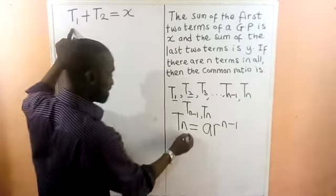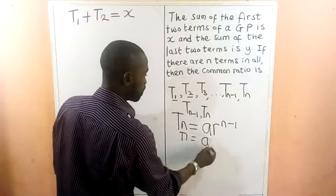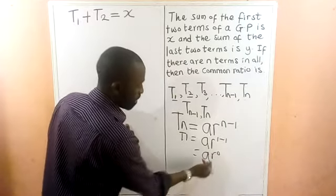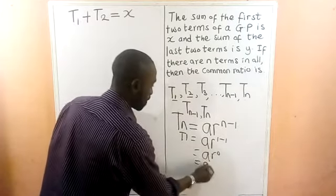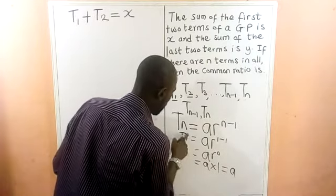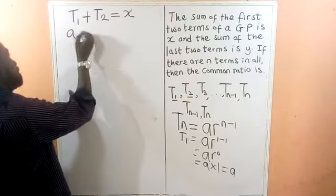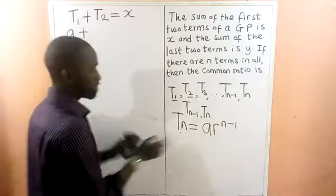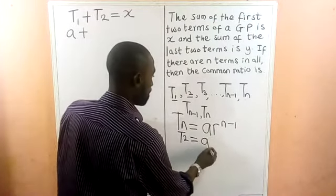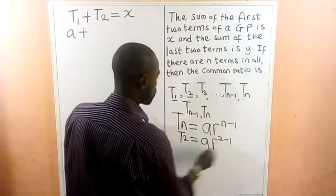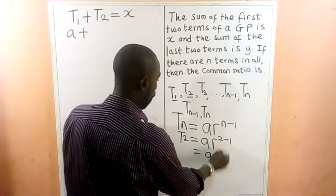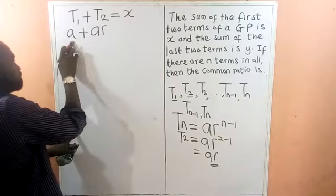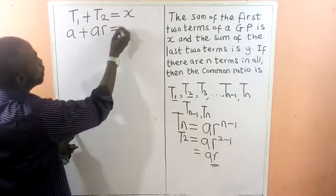For the first term, T1 equals A times R to the power of 1 minus 1, which is A times R to the power of 0, giving us A. For the second term, T2 equals A times R to the power of 2 minus 1, which is AR. So T1 plus T2 gives us A plus AR equals X.